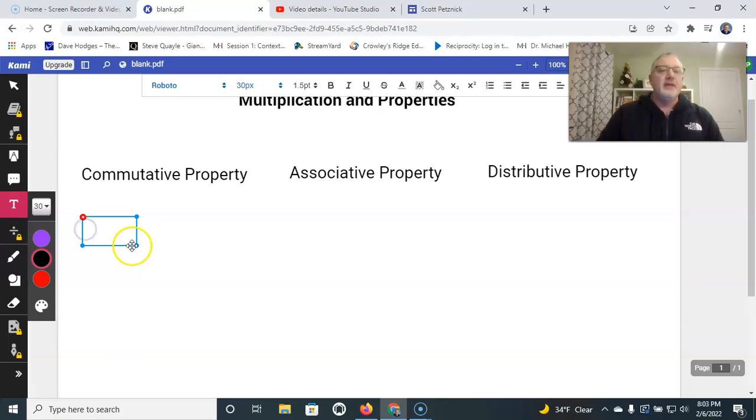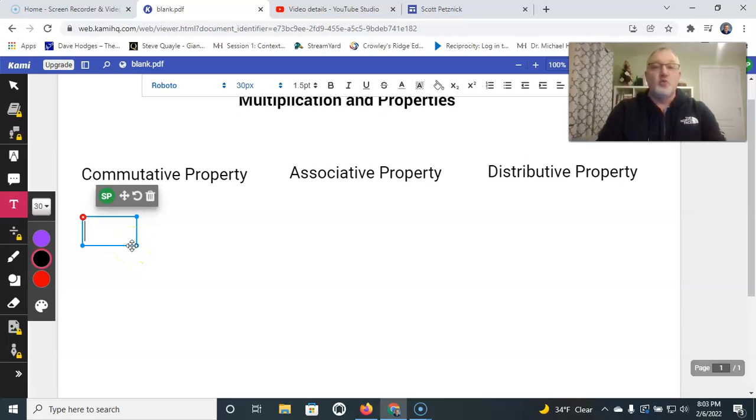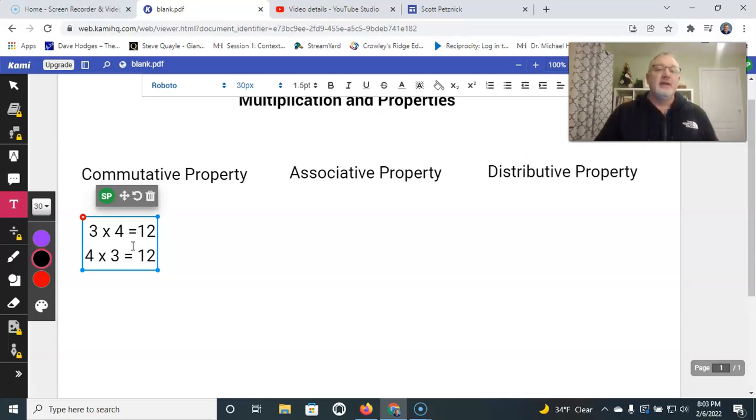Well, the commutative property, and again this works for adding as well as multiplying, just states this: that three times four equals twelve is the same as saying four times three equals twelve.